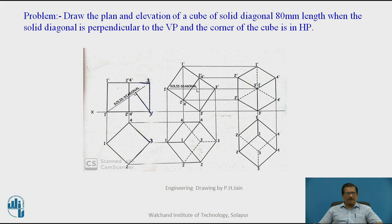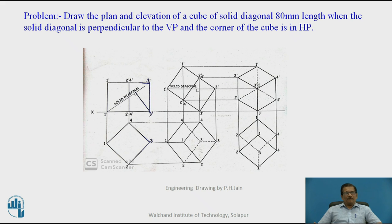The problem requires the solid diagonal to be perpendicular to VP and the corner of the cube to be in HP. From this we understand that the top view will be a square and the front view will be a rectangle. While drawing the square, we have to draw it in such a way that the solid diagonal must be parallel to HP when we go to the second stage. That is, 1-3 will be the solid diagonal which will be parallel to HP in the second stage. So the top view must be drawn such that the base edges make a 45-degree angle with VP.